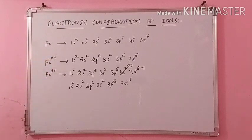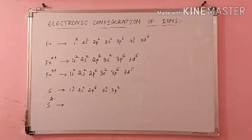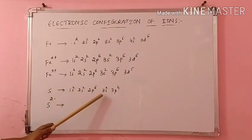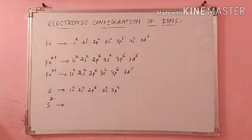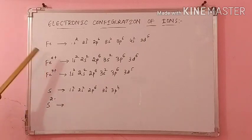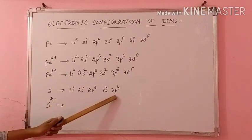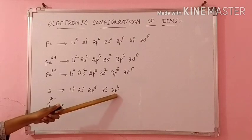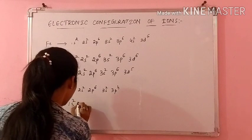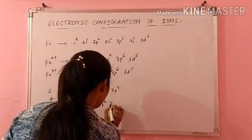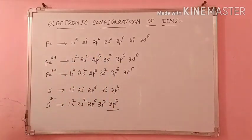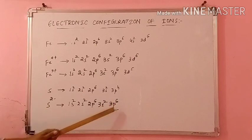Now we will discuss an example with a negative charge, the S2- ion. For sulfur, the configuration is 1S2, 2S2, 2P6, 3S2, and 3P4. If it is a 2 minus ion, since it is negative, you have to add the electrons. The question is where to add — the electrons should be added in the last portion, outside. So we have to fill 2 electrons in P, because P has the capacity to hold 6 electrons. So the new configuration becomes 1S2, 2S2, 2P6, 3S2, and 3P6, with the 2 electrons filled in.